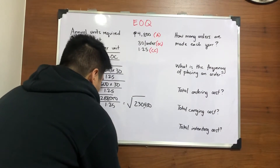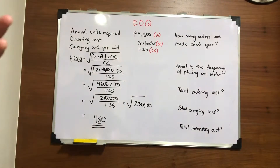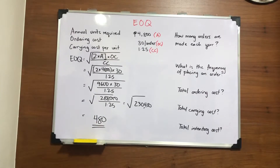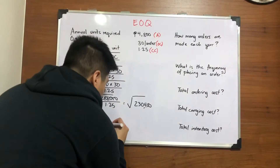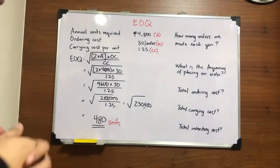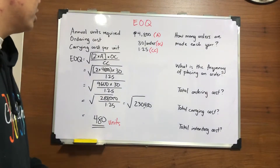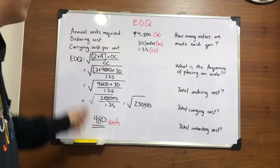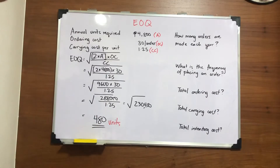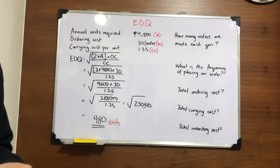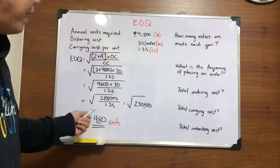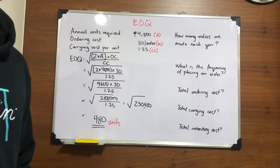You might be wondering — what is the significance of the 480? Is this peso or is this in units? This one is on a per unit basis. This means that this should be the quantity of units that you should order in order to reap the benefits of the ordering cost and carrying costs. When you order this quantity, you will get the least ordering and carrying cost. In other words, you will save on ordering and carrying cost when you order 480 units.